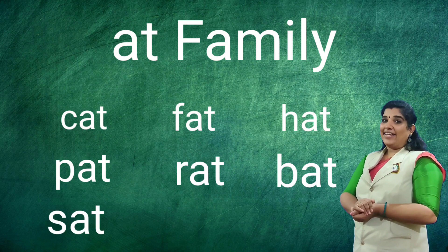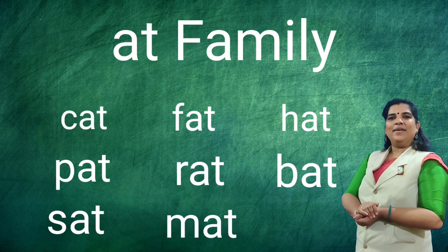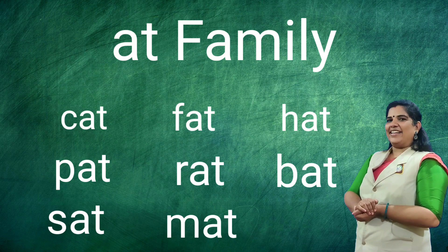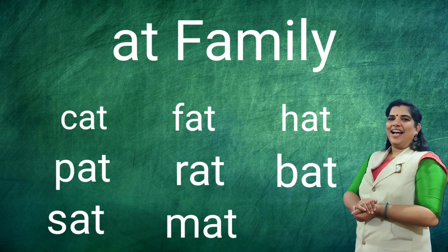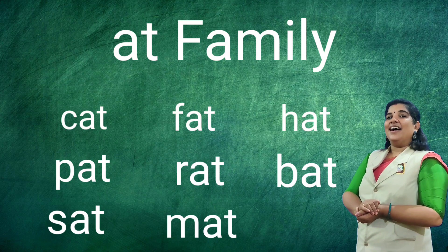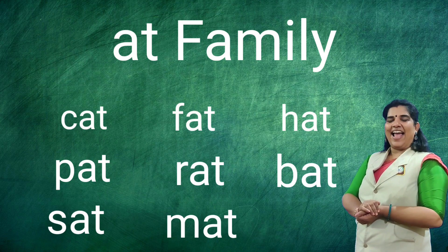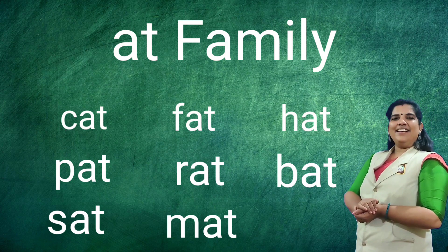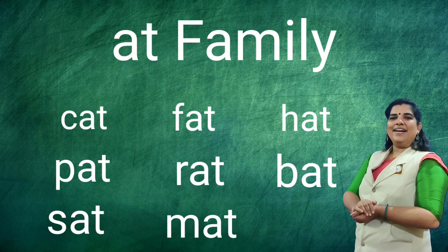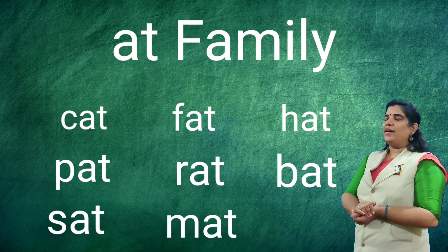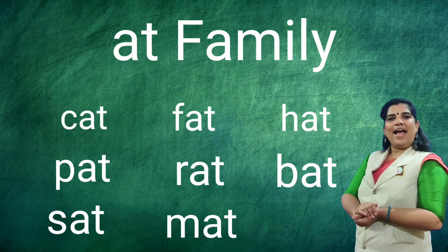S — sad. M — mad. Okay, now read once again: K and cat, F and fat, P and had, P and bad, R and rad, P and bad, S and sad, M and mad.